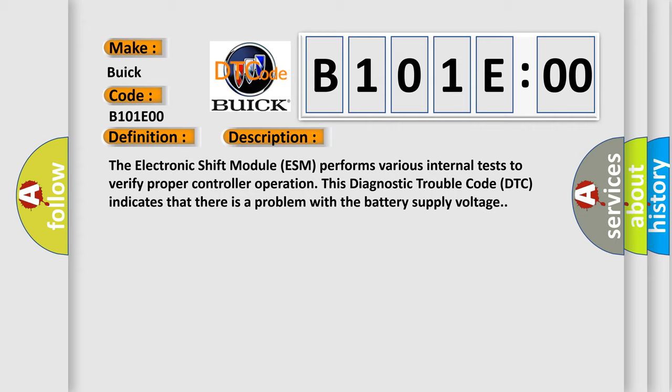The electronic shift module ESM performs various internal tests to verify proper controller operation. This diagnostic trouble code DTC indicates that there is a problem with the battery supply voltage.